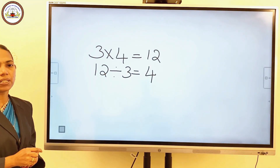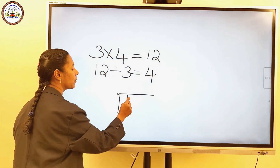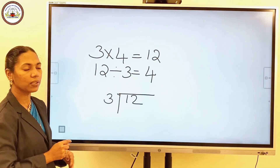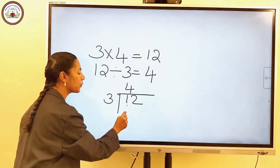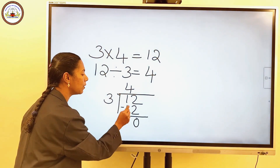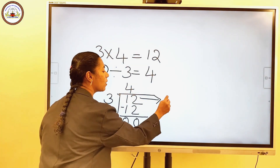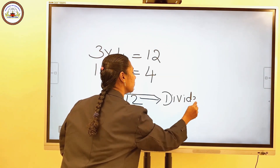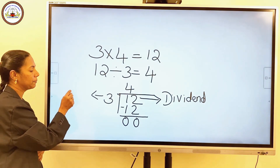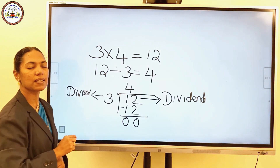Using the long division method, we can write this as: write 12 inside, 3 outside. 3 fours are 12, so write 4 here and subtract 12 below this 12. Now subtract: 2 minus 2 is 0, 1 minus 1 is 0. Here, 12 is called the dividend, 3 is the divisor, and 4 is the quotient.